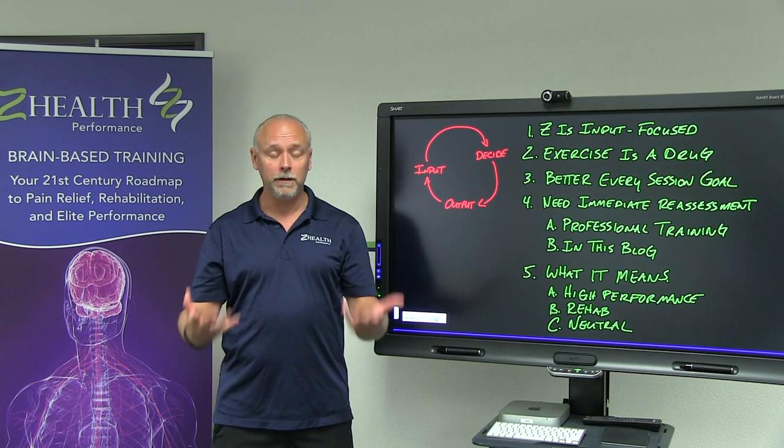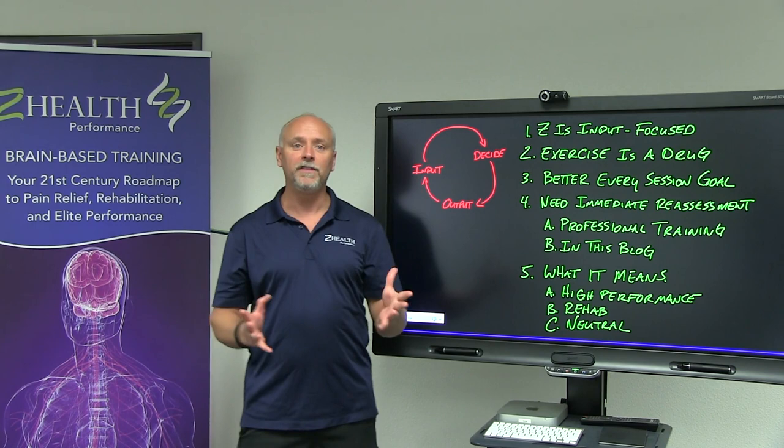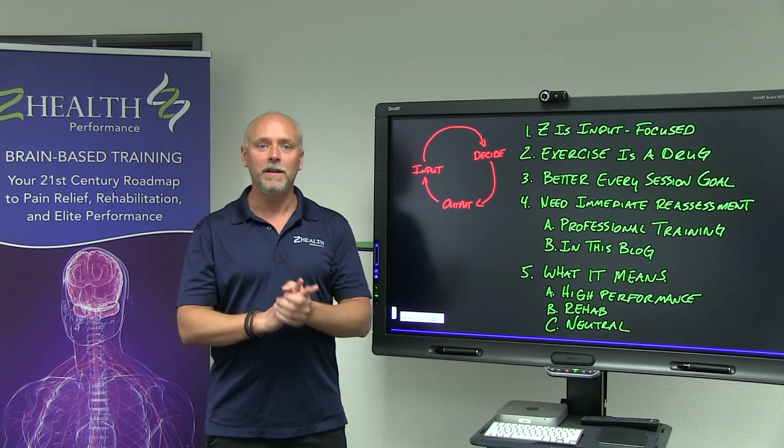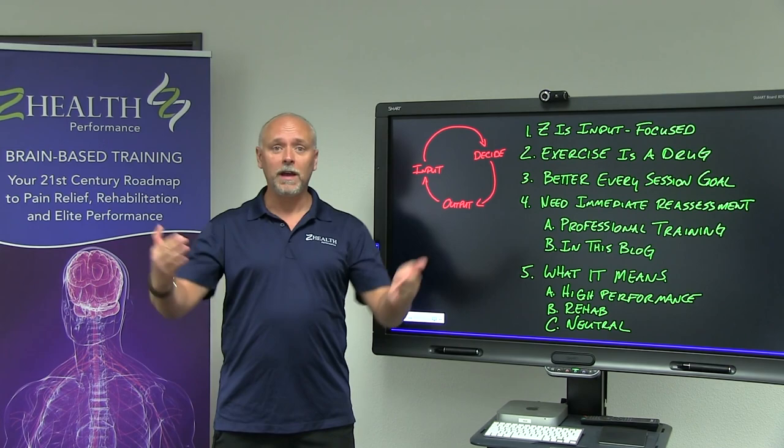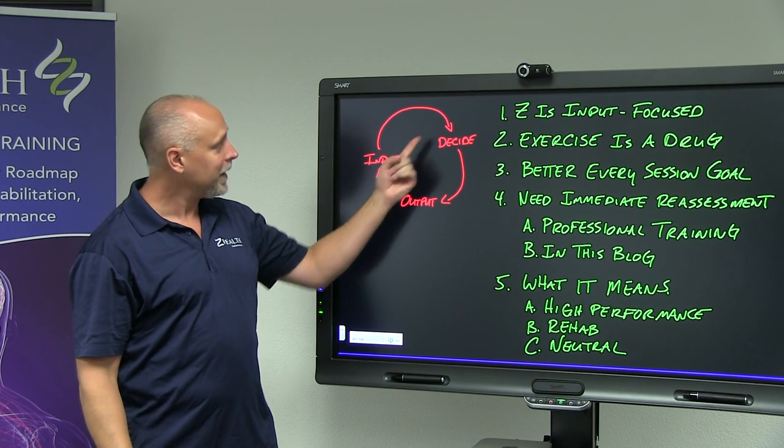What I want you to look at quickly is this little loop over here. The last few weeks I've been doing blogs about the neurology behind ZHealth. One of the things we talk a lot about is this idea of what we call Neurology 101, which is how your body works. Basically, as you're going through life, your eyes, your ears, your skin, your movement — that's all sending input into your brain. Once it hits your brain, your brain has to integrate and interpret that information, decide what to do with it, and then create an output.